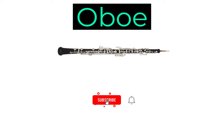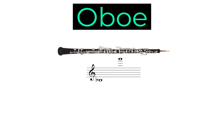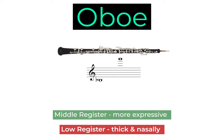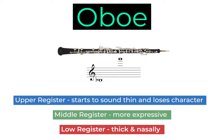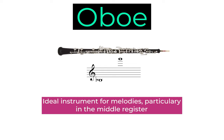Unlike the flutes, the oboes produce a sound by utilising two wooden reeds in the mouthpiece, giving the instrument a very distinct sound. Its range is from the Bb below middle C up to a G three octaves above middle C. Its low register is thick and nasally, while the middle register is ideally suited for playing expressively, particularly for melodies. The high register quickly becomes thin sounding, losing some of its tonal characteristics. Because of the oboe's expressiveness, particularly in its middle register, it's an ideal instrument for melodies.